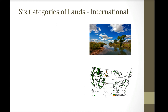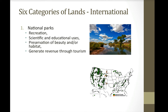Let's start with international lands. We have six categories recognized in the international community. The first is national parks, which can be designated by any nation. They can be used for recreation, scientific and educational uses, preservation of beauty or habitat, and to generate revenue through tourism. The picture on the right is Kruger National Park in Kenya.